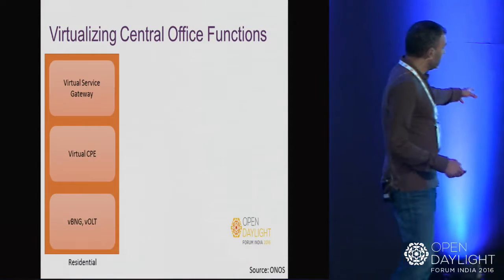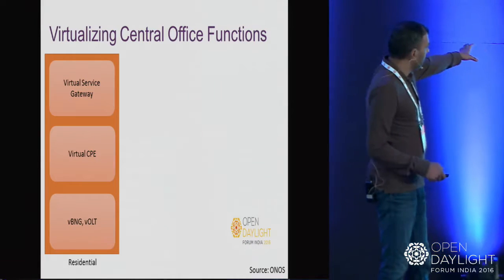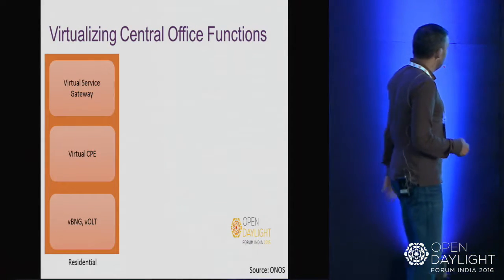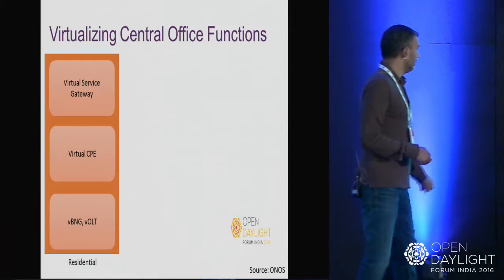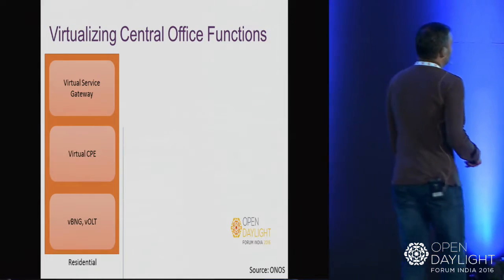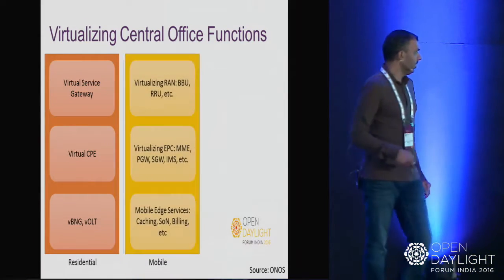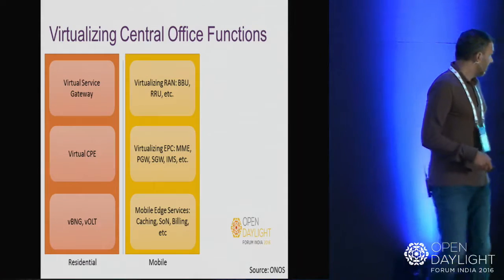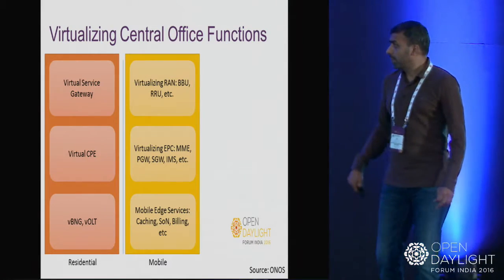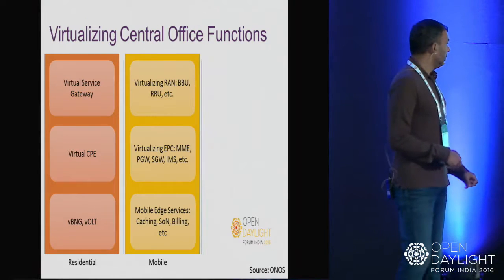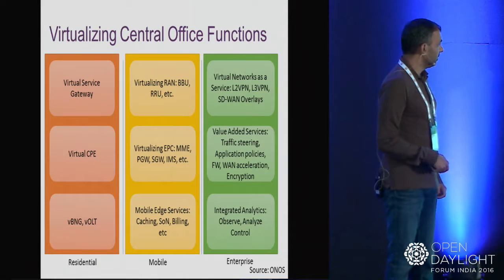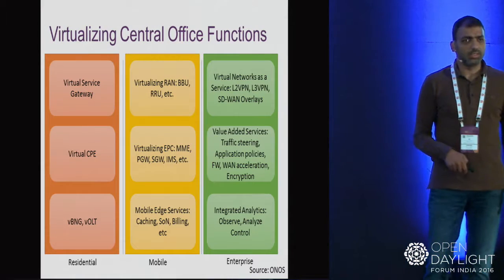For the residential use case, functions like OLT, BNG, and aggregation switches will be virtualized. For mobile, we have virtualizing RAN, EPC, and edge services like caching, SON, and billing. For enterprise, there are VPN services, value-added services, and integrated analytics. To summarize the requirements for cloudifying the central office: we expect a data center fabric controlled by an SDN controller, VNFs managed by a VNF orchestrator manager — preferably generic — and NFVI management.